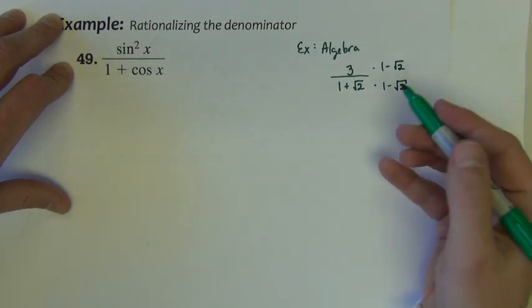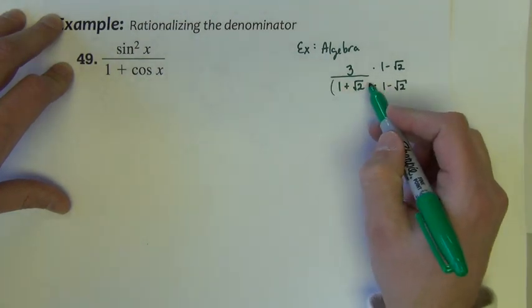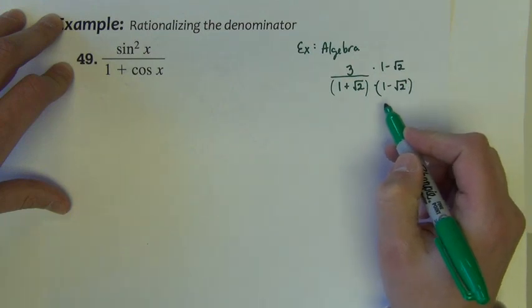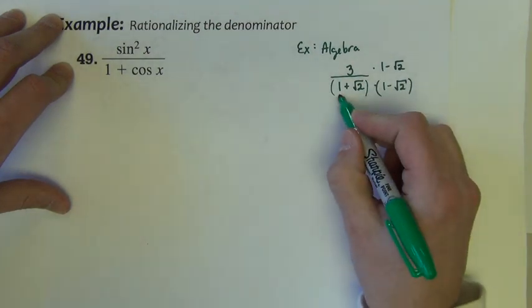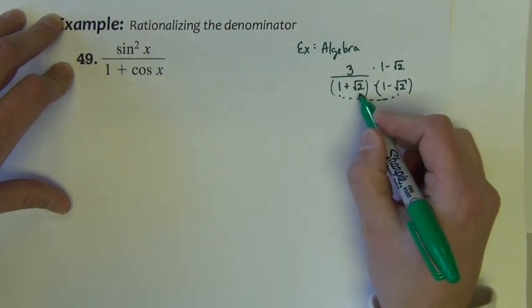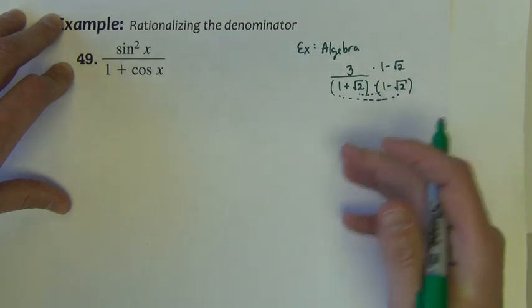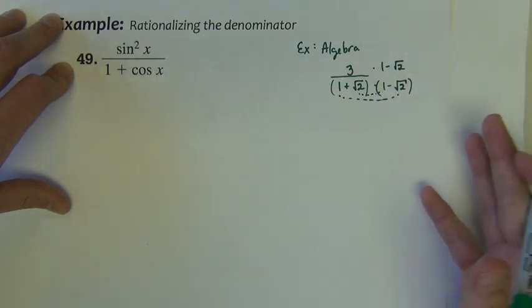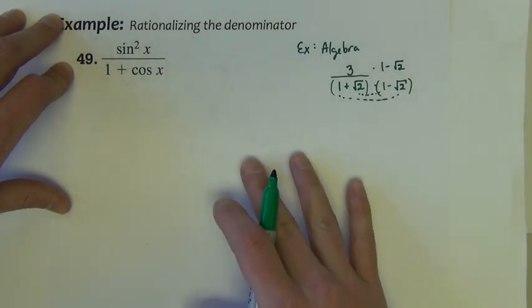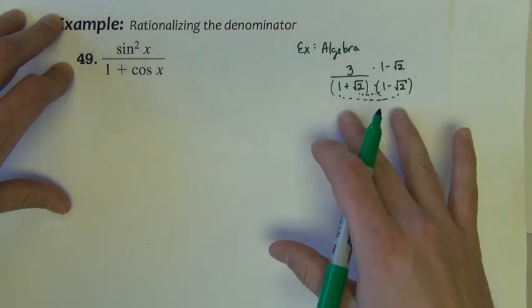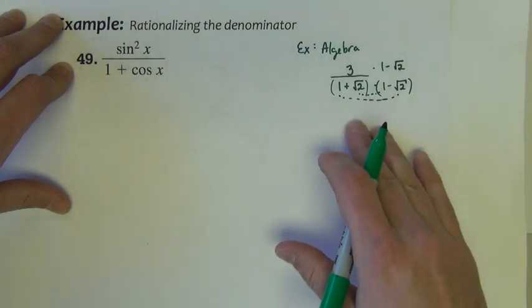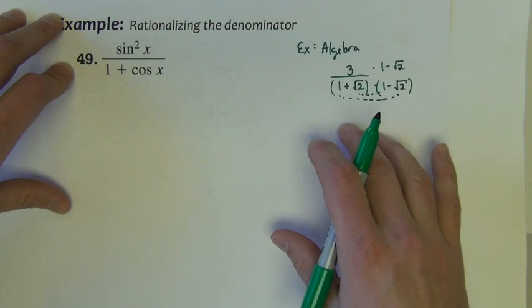You know, we know why we do that too. Because we know that when we go to foil the denominator, we know that the outside product and the inside product, they cancel out every time. And so the square root ends up being gone in the denominator. That's kind of the objective there is to remove that square root from the denominator.